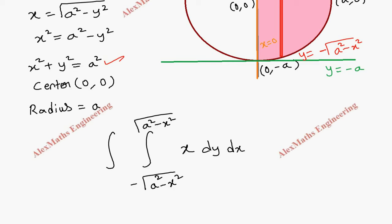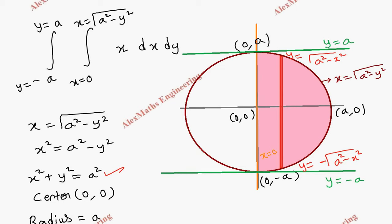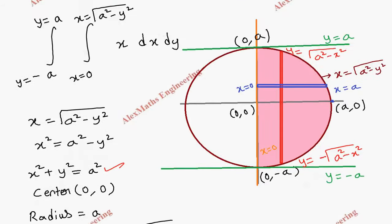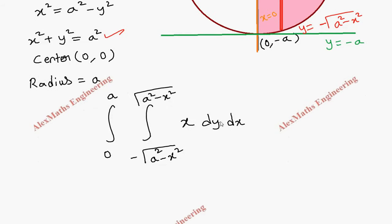Now we need the limit of x. Taking the horizontal strip, the extreme left value of x is 0 and the extreme right is a, so x goes from 0 to a. We write the integral from 0 to a. We have now changed the order from dx dy to dy dx.